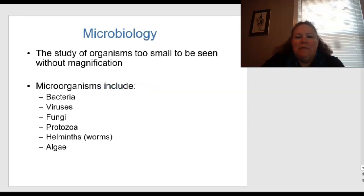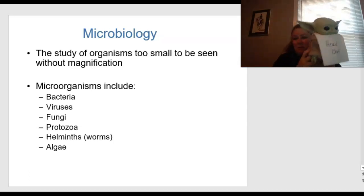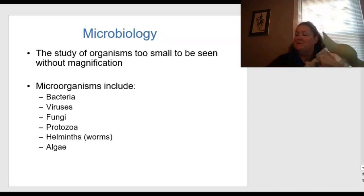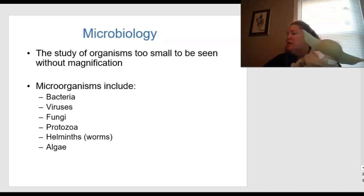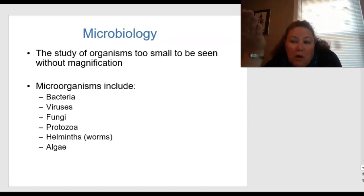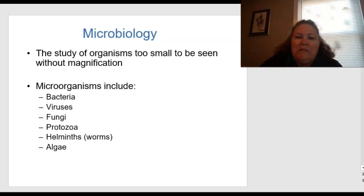Microbiology is the study of organisms that are too small to be seen without magnification. Micro means small and macro is big. Macrobiology would be identifying something you can see with the naked eye, whereas in microbiology the organisms are too small to be seen with your eyes alone, so we have to use magnification through a microscope.